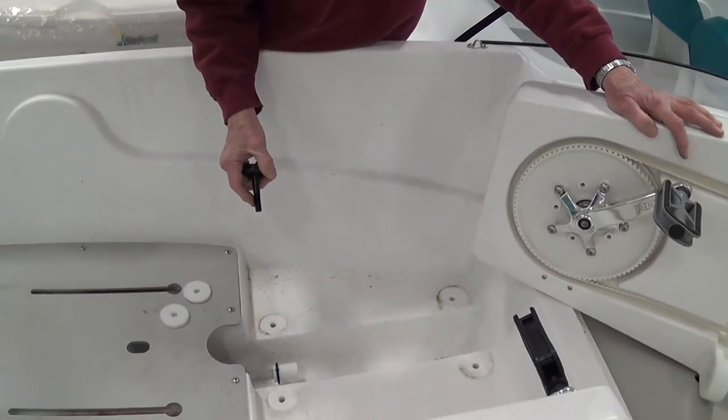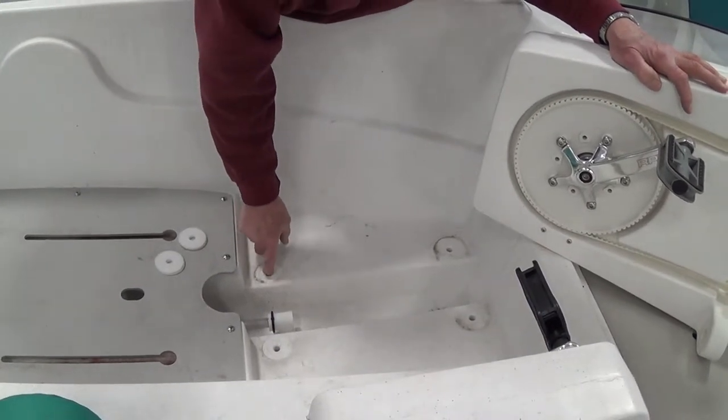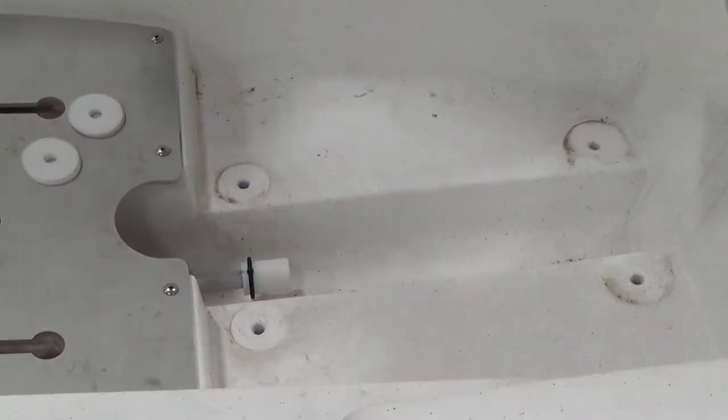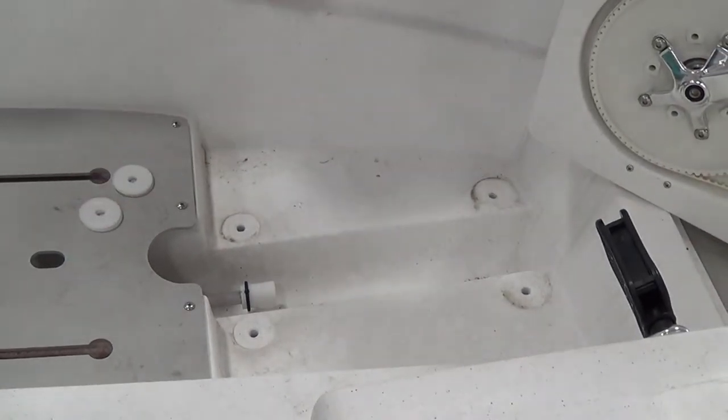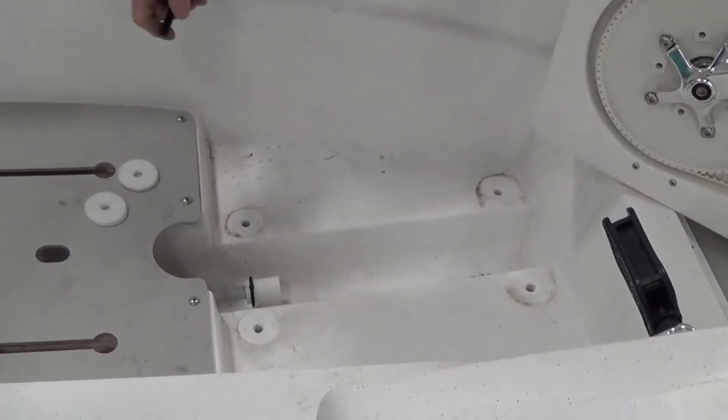If you don't put them all back in, water has the potential of going down through these holes and getting between the floor and the hull of the boat, getting water down inside there. And the only way to get that water out of there is through the drain holes out and back.